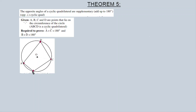Now let's prove Theorem Five. We are given points A, B, C, and D that lie on the circumference of a circle, so ABCD is a cyclic quadrilateral. We are required to prove that angle A plus angle C equals 180 degrees. To prove Theorem Five, you need to do a construction.